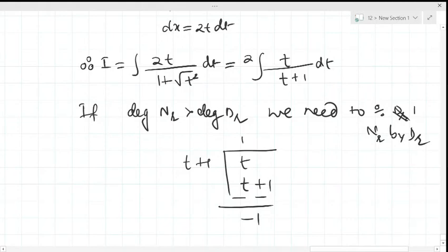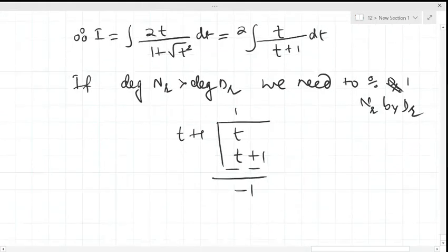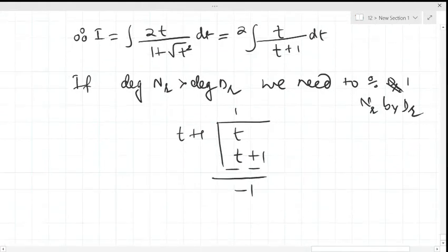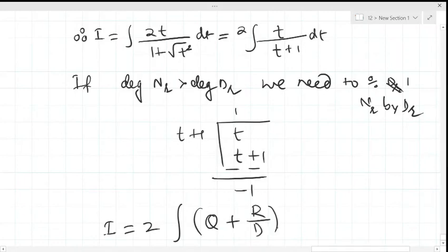So it becomes I is equal to 2 times integral of, and for writing this you need to use this concept: quotient plus remainder upon divisor into dx. This is called quotient, remainder, and this is called divisor.